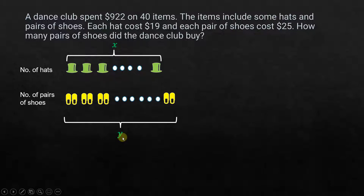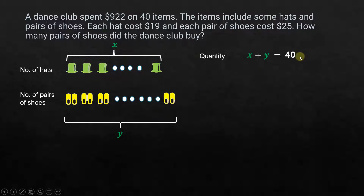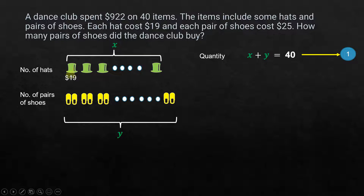Now let's look at what we know. The total number of items is 40. In terms of quantity, the number of hats X plus the number of shoes Y should be equal to 40. We can represent this as Equation 1: X + Y = 40.